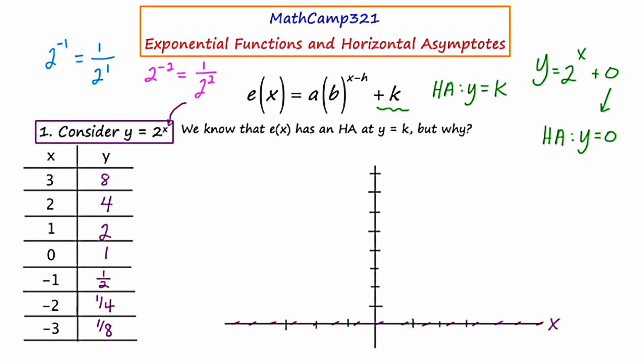I'll plot the points that we came up with. We had three got sent to eight. Two got sent up to four. One got sent to two. Zero got sent to one. Negative one was sent to one half. Negative two was sent to one fourth. Negative three was sent to one eighth.